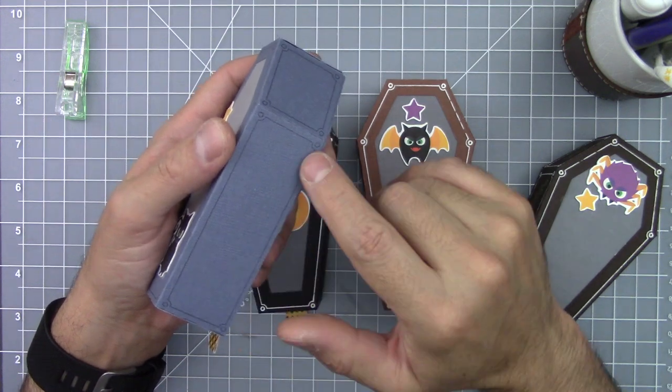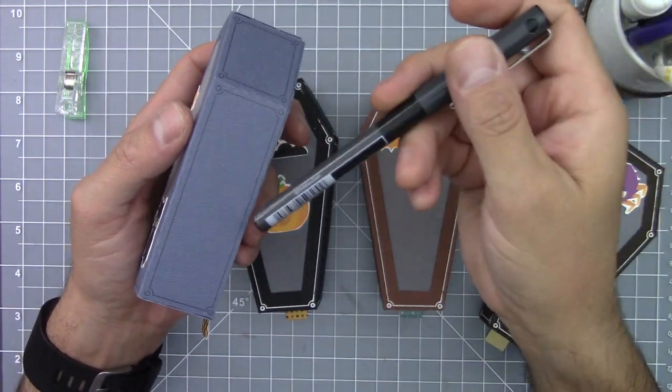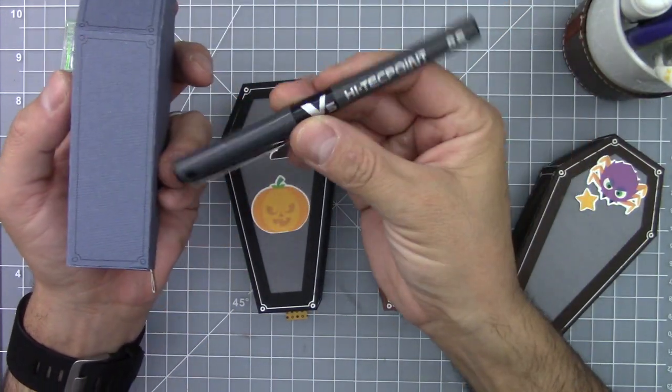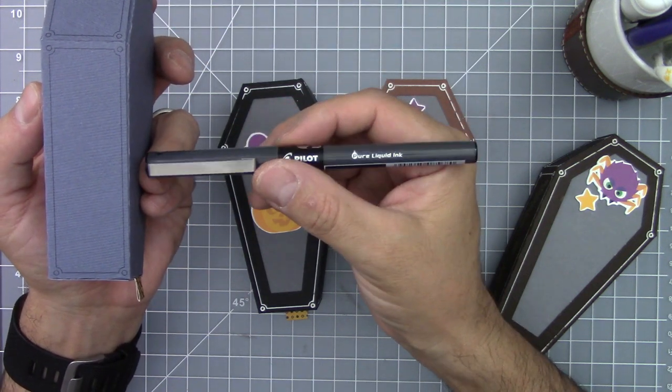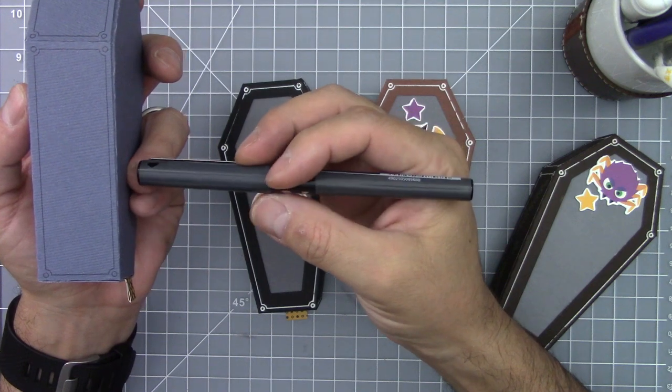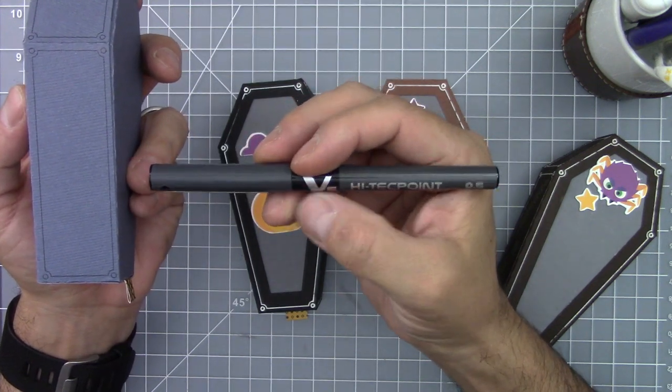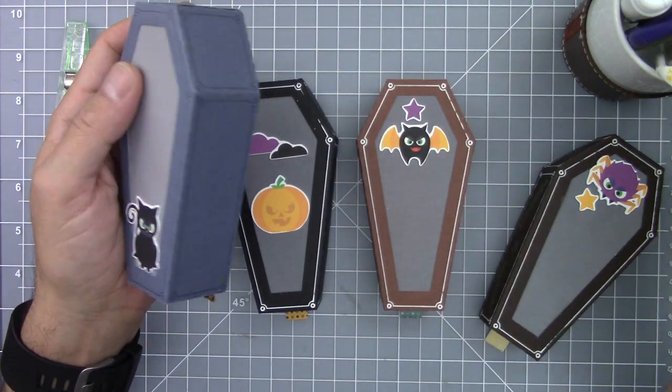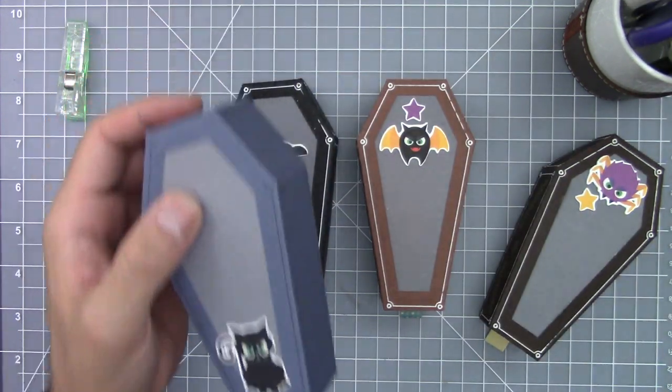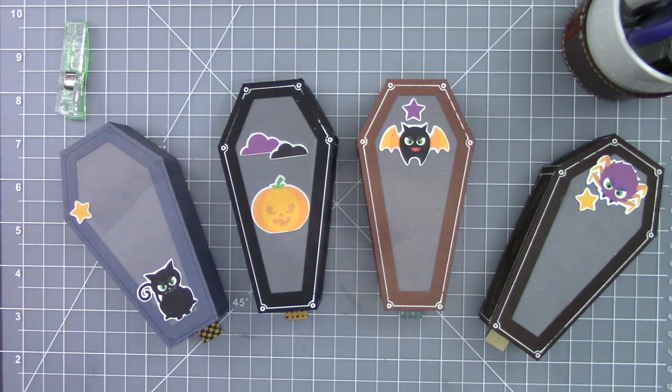I also made one using just a black marker. This was a V5, a Pilot V5 hi-tech point marker. I decided not to embellish any of the coffin so you can see how easy it could be with just the writing. And you can also skip the writing altogether if you want to.